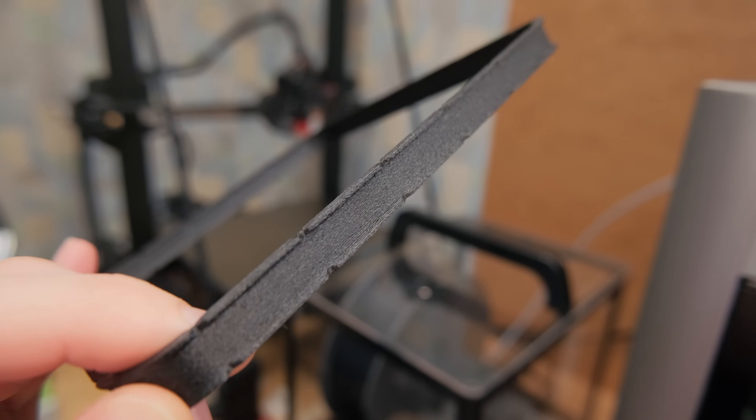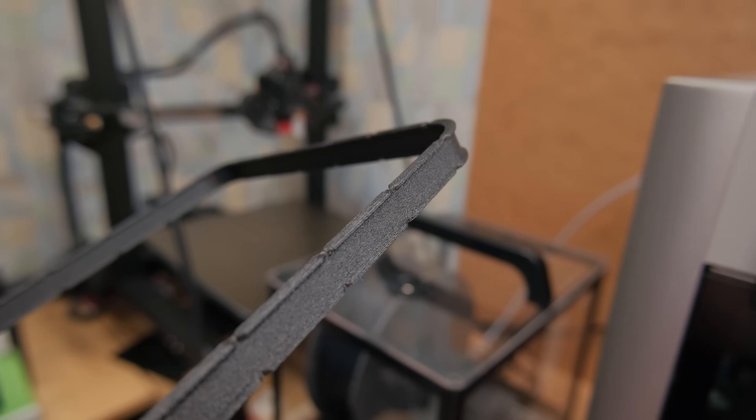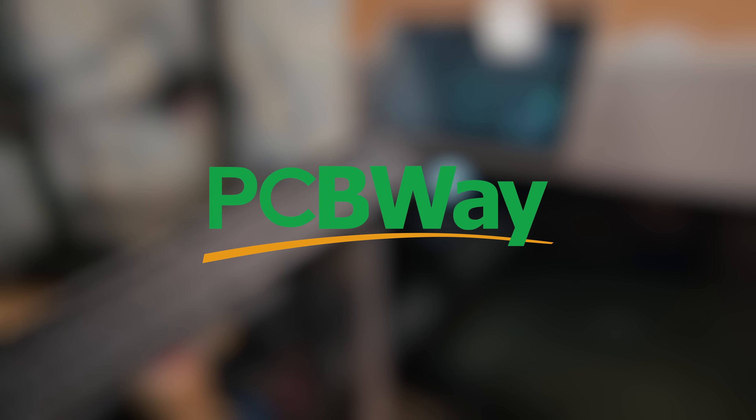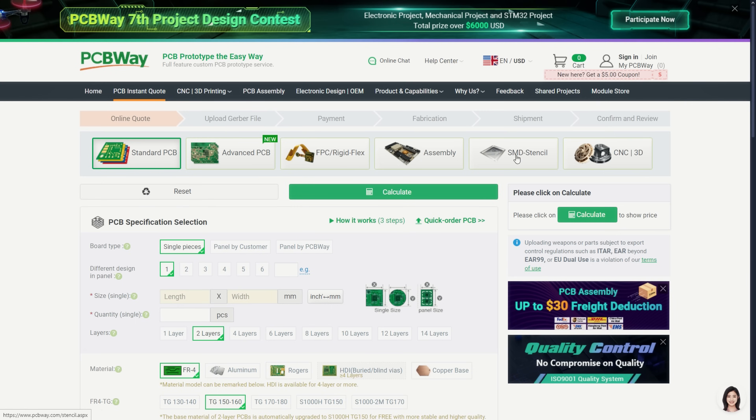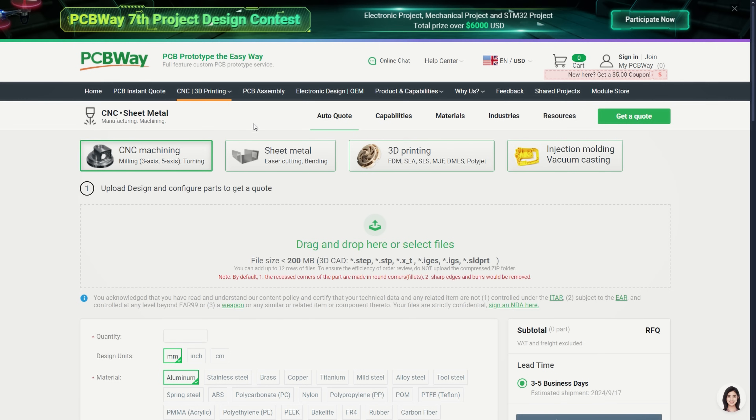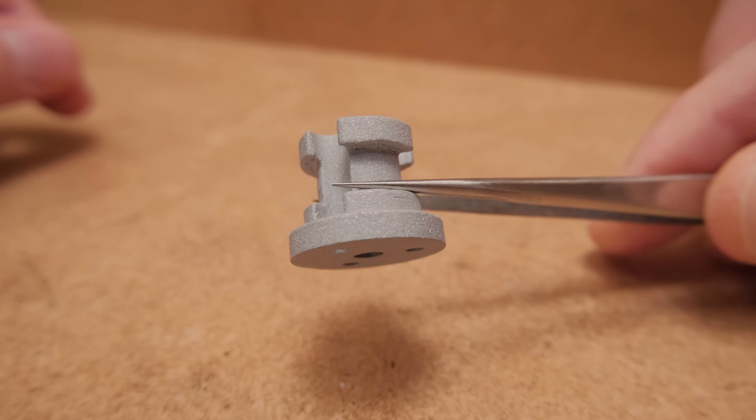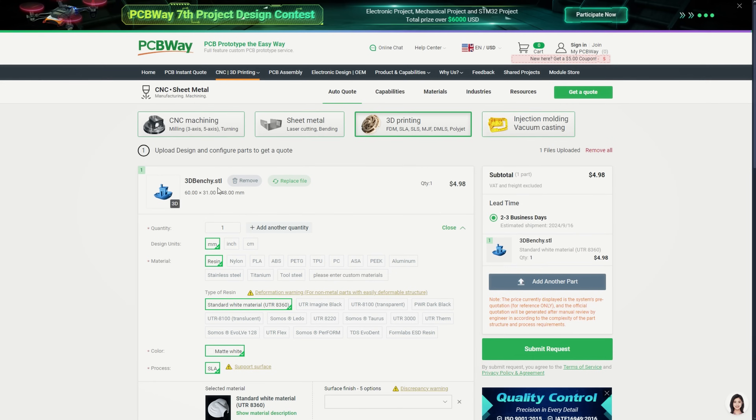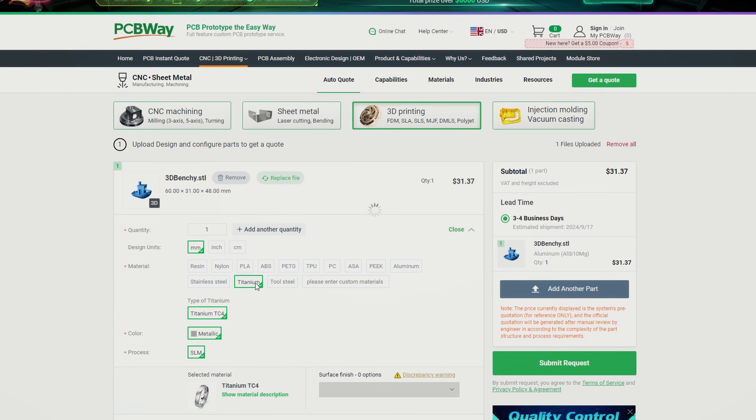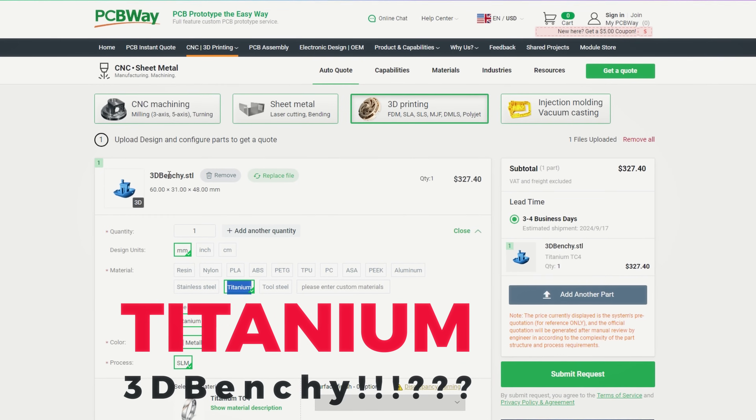3D printing is way more involved than most people think it is. So if you don't want to deal with strange issues like this, you can check today's video sponsor PCBWay. They offer many professional services and over the years, 3D printing from aluminum has become one of my favorites for my projects. I am just surprised that nobody tried making a metal benchy just for the bragging rights. Well, check them out using the link in the video description.